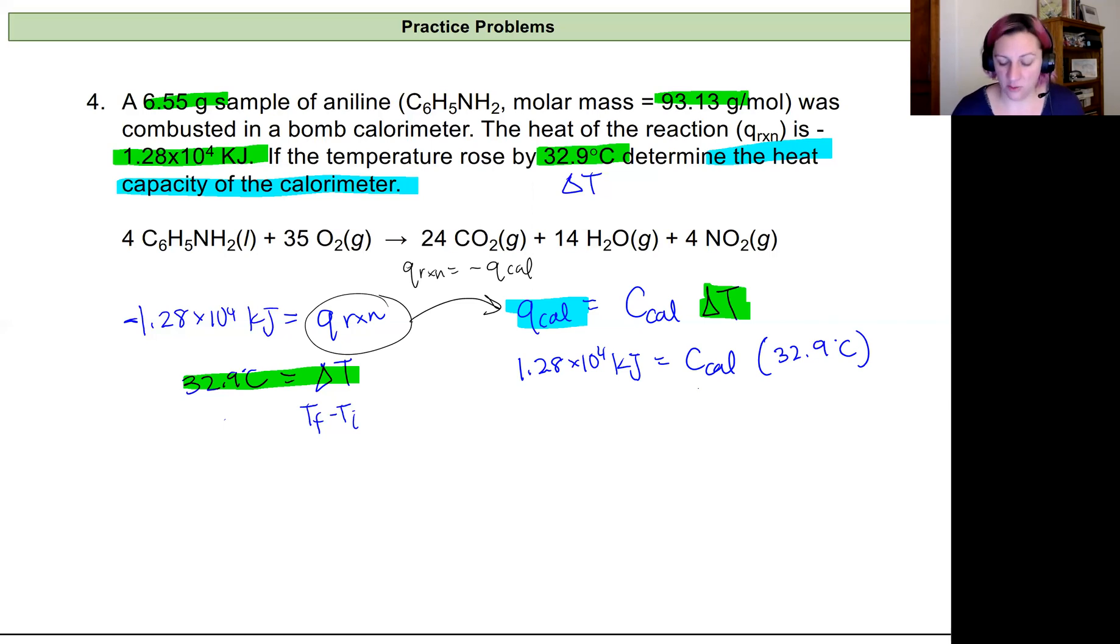To solve this, I'm dividing both sides by 32.9, and I can calculate the calorimeter heat capacity by dividing those two numbers, and I get a value that is 389.1 kilojoules per degree Celsius.